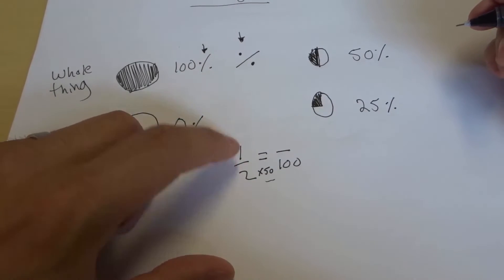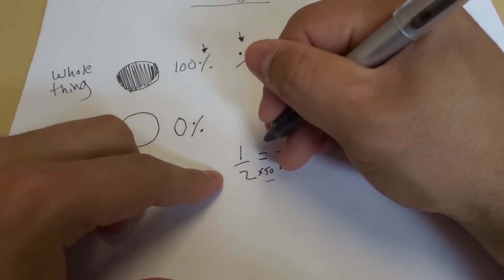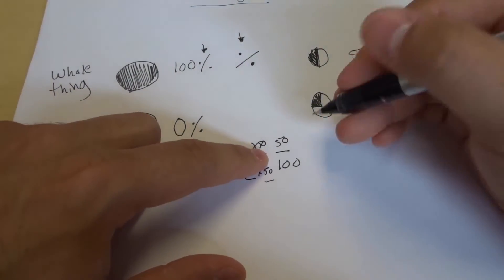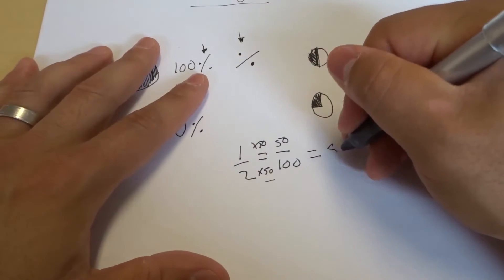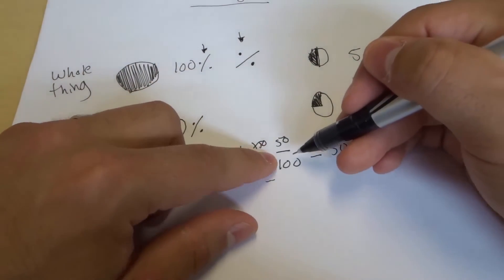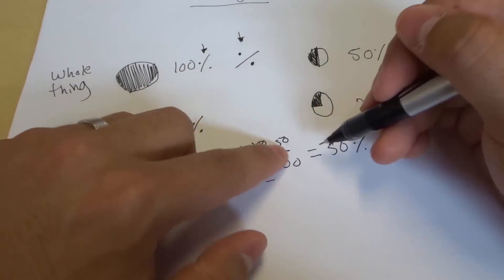So we do the same thing to the top number. 1 times 50 is equal to 50. And 50 out of 100 is equal to 50%. Whenever you have a number over 100 or out of 100, that's going to be the percent.